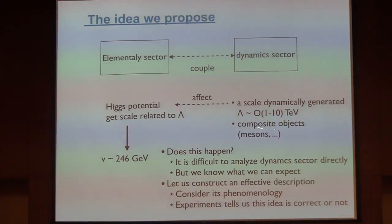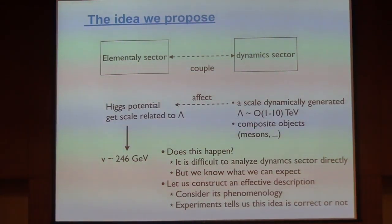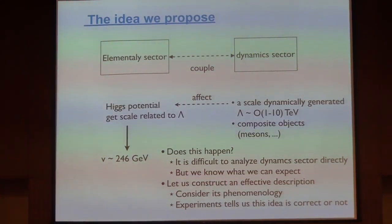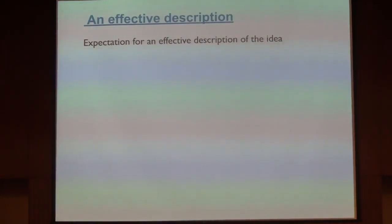To check whether this story is correct, we need to find some dynamics and study the dynamical sector directly. But it is very difficult — we cannot solve the dynamical sector because we cannot use perturbation theory. However, we can expect that some composite objects arise from the dynamical sector. So instead of studying the dynamical sector directly, let's consider the phenomenology of the system and indirectly check this idea.